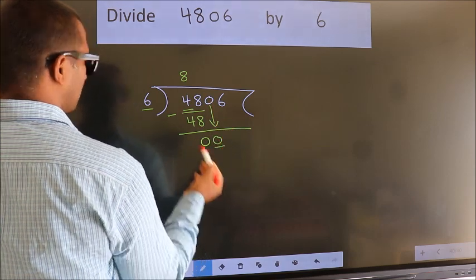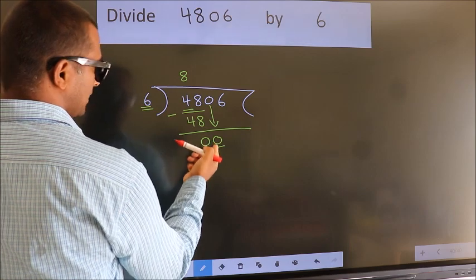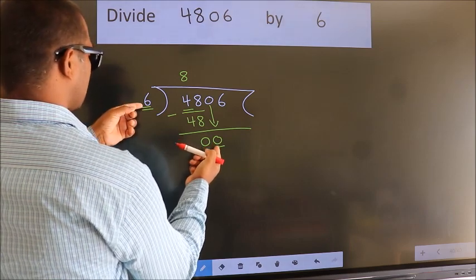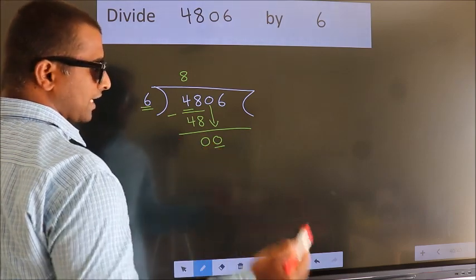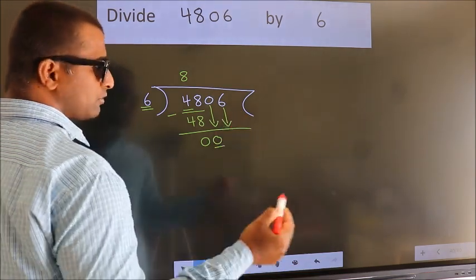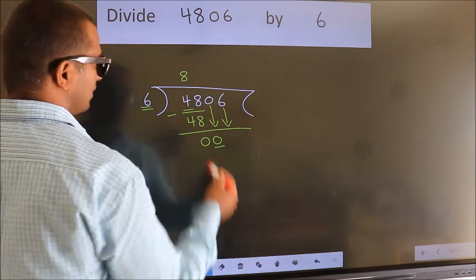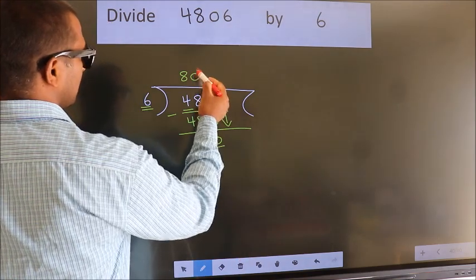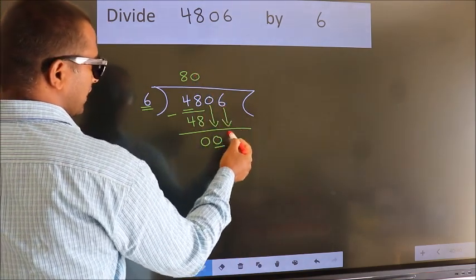Here we have 0, here 6. 0 is smaller than 6, so we should bring down the second number. And the rule to bring down the second number is: put 0 here.